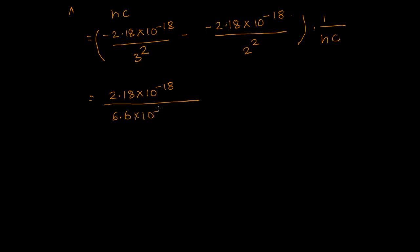This divided by h — which is 6.6×10⁻³⁴ — and c, which is 3×10⁸. The bracket simplifies to 1 upon 4 minus 1 upon 9, not minus 1 upon 9 plus 1 upon 4. So the expression is 2.18×10⁻¹⁸ over (6.6×10⁻³⁴ × 3×10⁸) times (1/4 − 1/9).